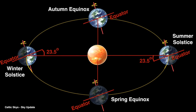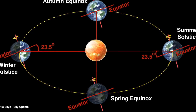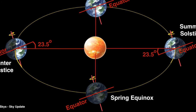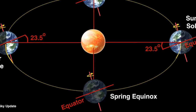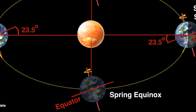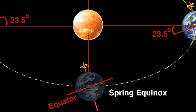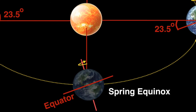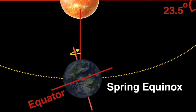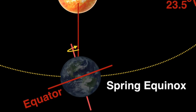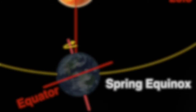At the spring equinox the northern hemisphere begins to enter the longer warmer summer days, but in the southern hemisphere winter beckons. But on this one day we are all — north and south — equidistant from the summer and winter.